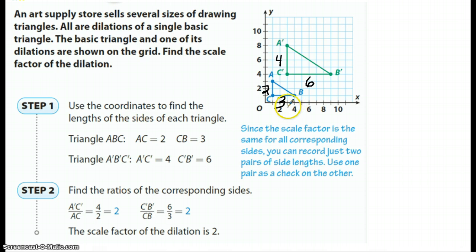Now, it asks us for step two. It says find the ratio of the corresponding sides. So here I'm going to look at the new and the original. And this is what we have here. A prime, C prime is four. That's where we see it.